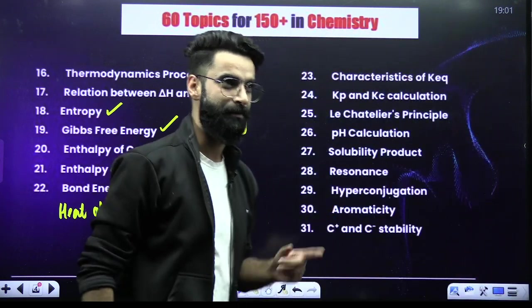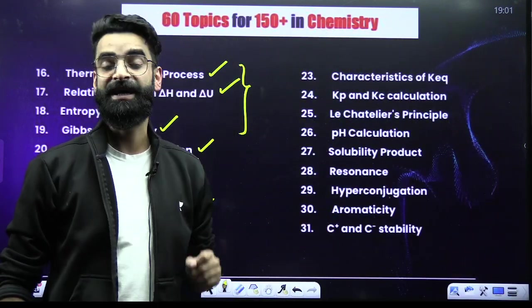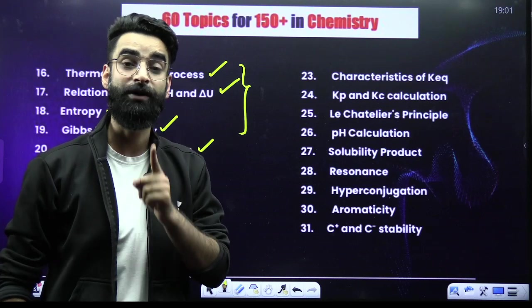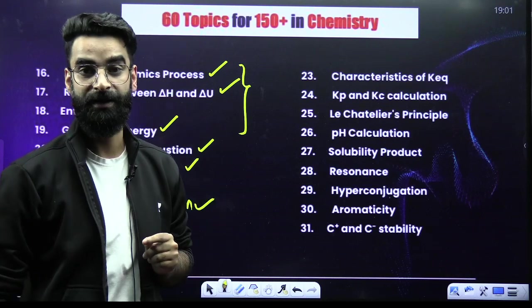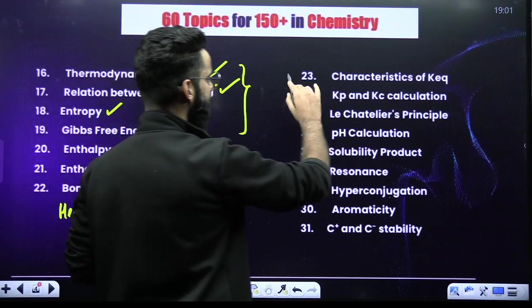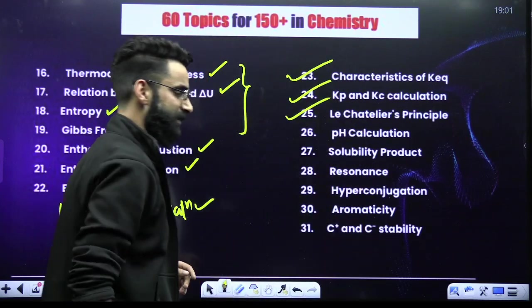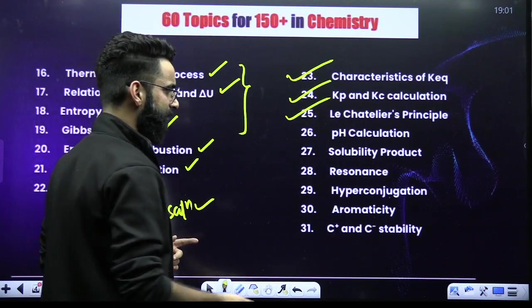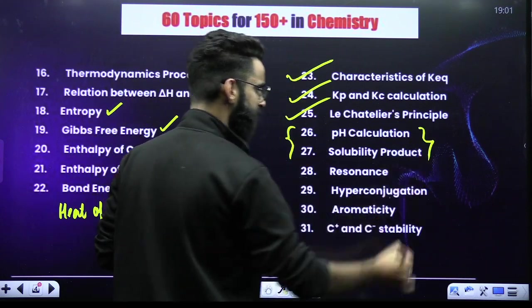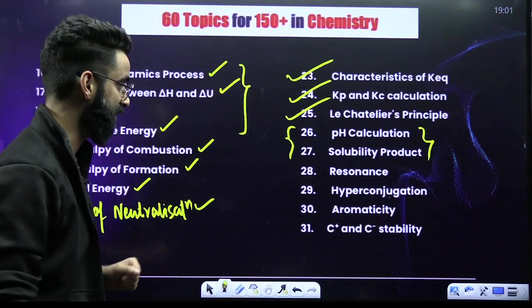When it comes to Equilibrium — by the way, equilibrium is going to be our next chapter in the Game of NEET 2.0 series, happening live on this channel on Monday at 5 p.m., covering Chemical Equilibrium completely. Key topics: characteristics of equilibrium constant, Kp and Kc calculation, and Le Chatelier's principle. When it comes to Ionic Equilibrium, the two main topics are pH calculation and solubility and solubility product.